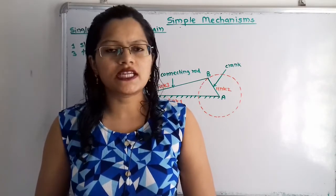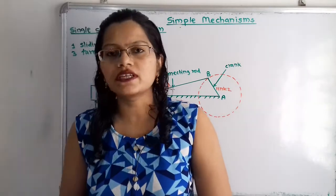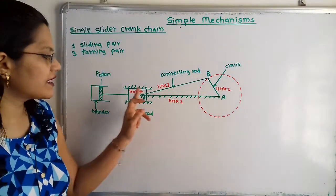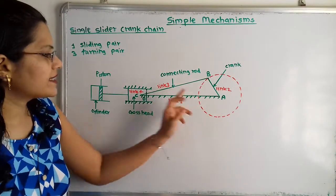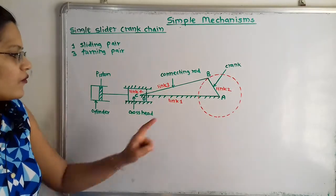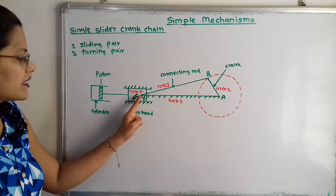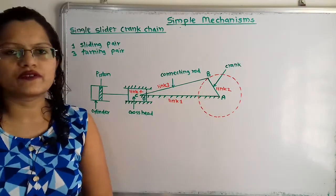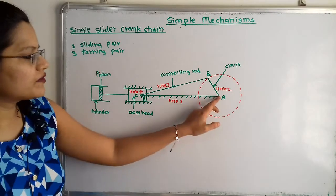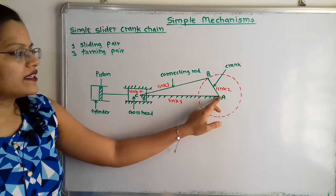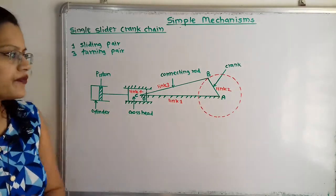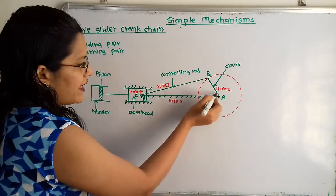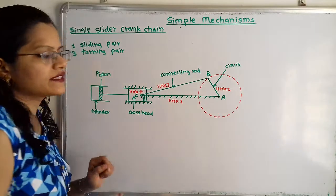Let us understand these links with the help of the diagram. Here is the fixed link, known as link 1. One end of the link is connected to the crosshead and the other end is the center of the crank. The center of the crank, that is point A, is also fixed. From this point A there is the crank, and this crank is known as link 2.